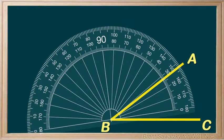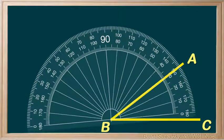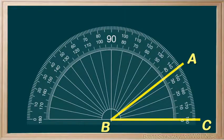Next, you'll line up the zero line of the protractor with one side of the angle. And finally, you measure using the appropriate set of numbers.